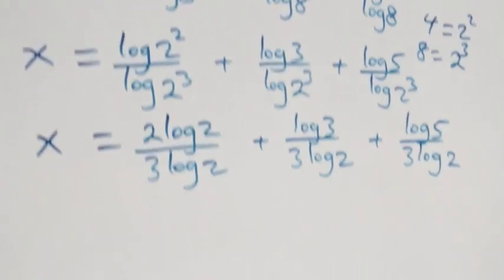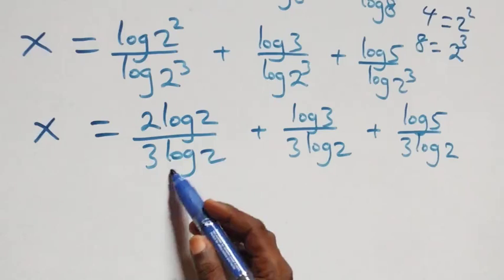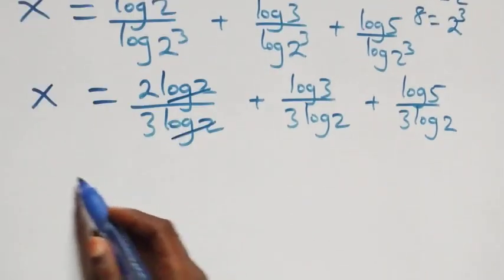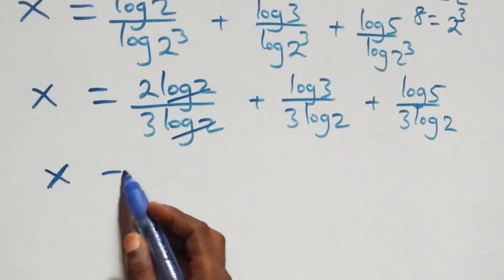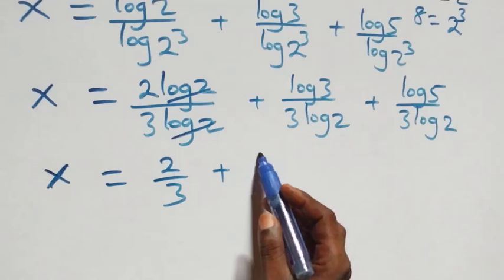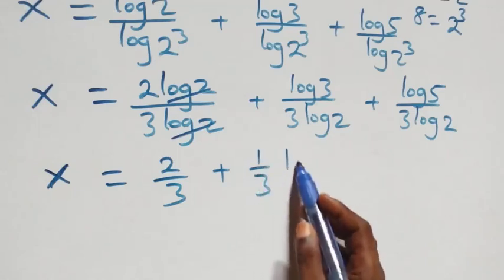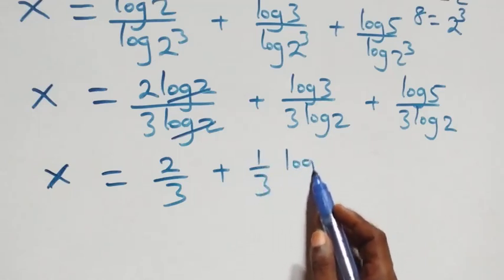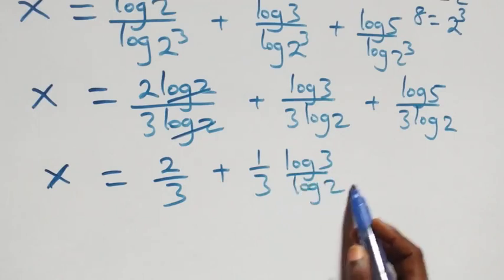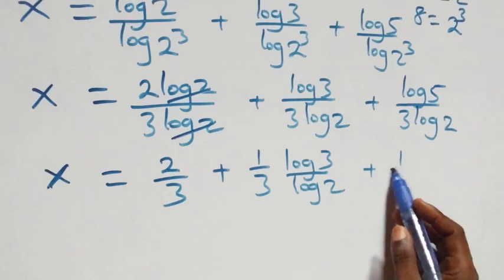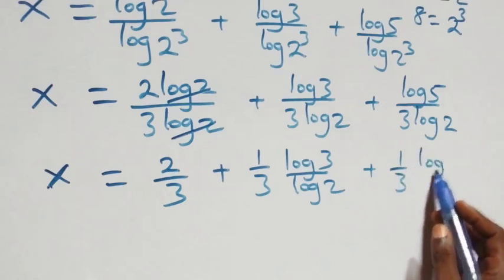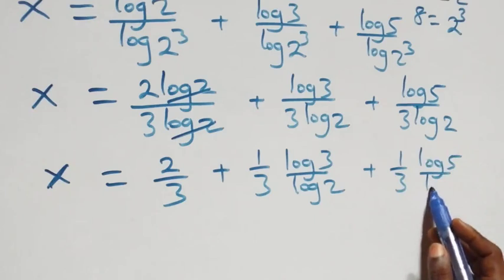Log two cancels each other in the first term and we have two over three left. So x equals to two over three, plus one over three times log three over log two, plus one over three times log five over log two.